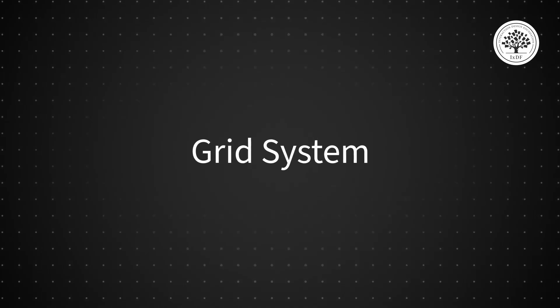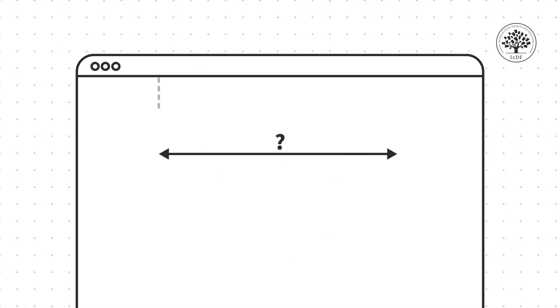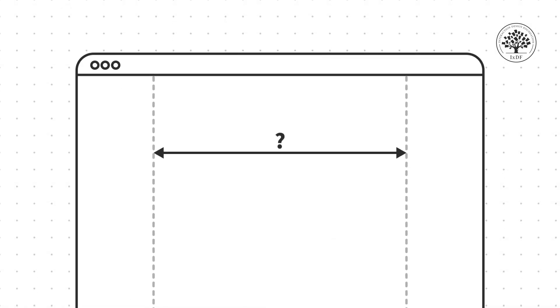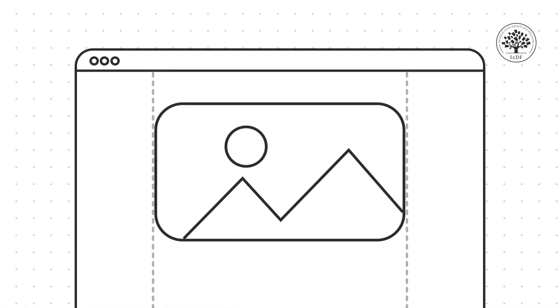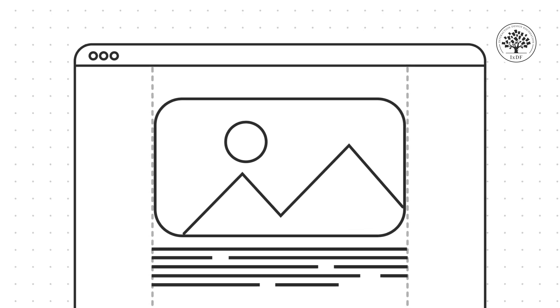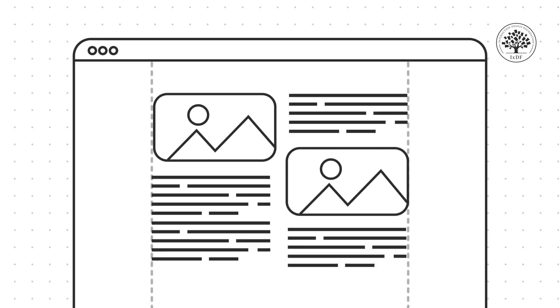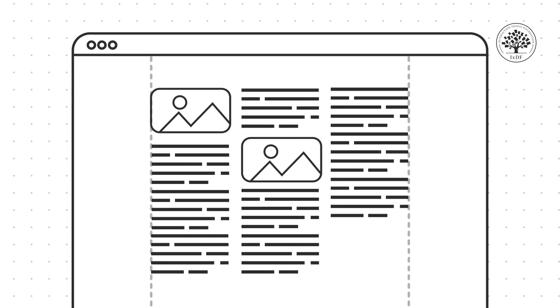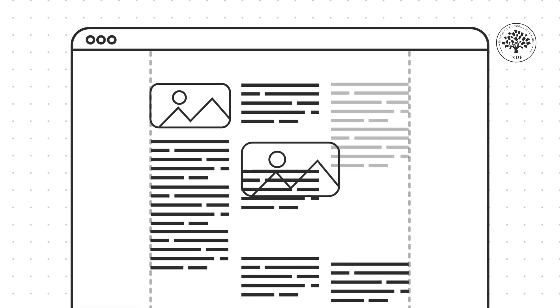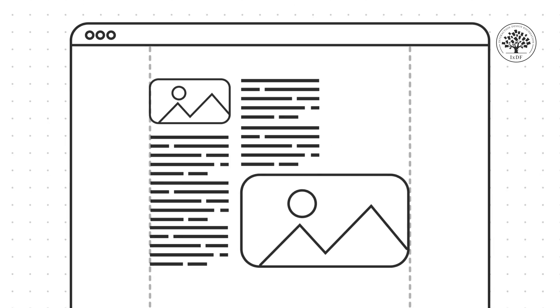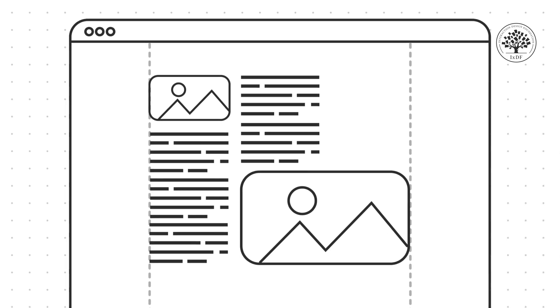A grid system. If you're designing your portfolio for the web, you will also need to define your grid system, similar to when you do it for your digital projects. Things to consider are, for example, what's your maximum width? Do you want to center your content on one main column, or use layouts and organize content into two or three columns? You can also play with grid offsets to structure your content, as long as it's consistent across your portfolio.